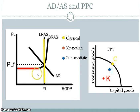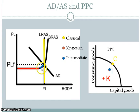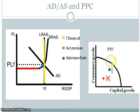Connecting the Keynesian model with the classical model is that intermediate range. This is where you start to see that the price level and wages are a little more flexible — not as flexible as in the long run — but as output is rising, you also have a rise in the price level. So you're closer to full employment than you would be in the Keynesian range, but this intermediate range is still below full employment, or that maximum amount that you can produce with the given resources that you have.